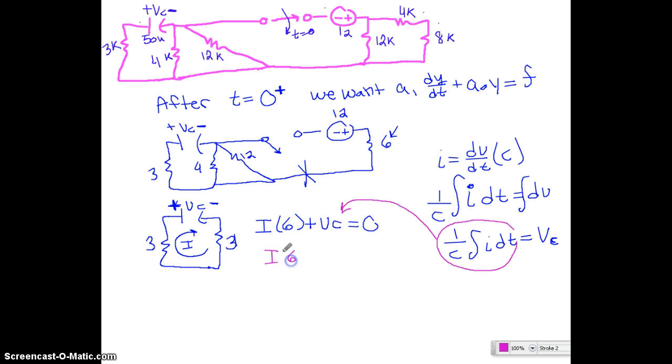So now we have i6 plus 1 over c integral of i dt is equal to 0. Now both of these i's are going to be the iC that we're looking for. So we could actually, since we want this in the form of dy dt is equal to y. And this one is the integral and then this one is just normal. If we take the derivative, we're going to get the derivative of this first one. So it's going to look like a di dt 6. And once we take the derivative of an integral, we're going to get just the normal equation. So we're going to have 1 over c i.